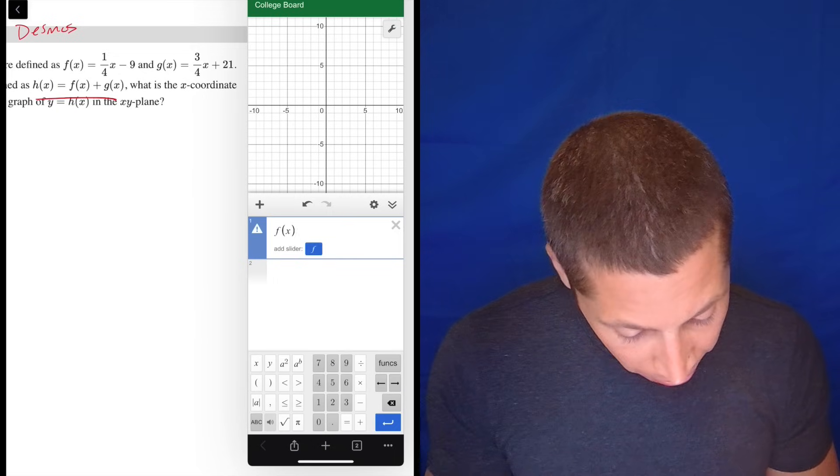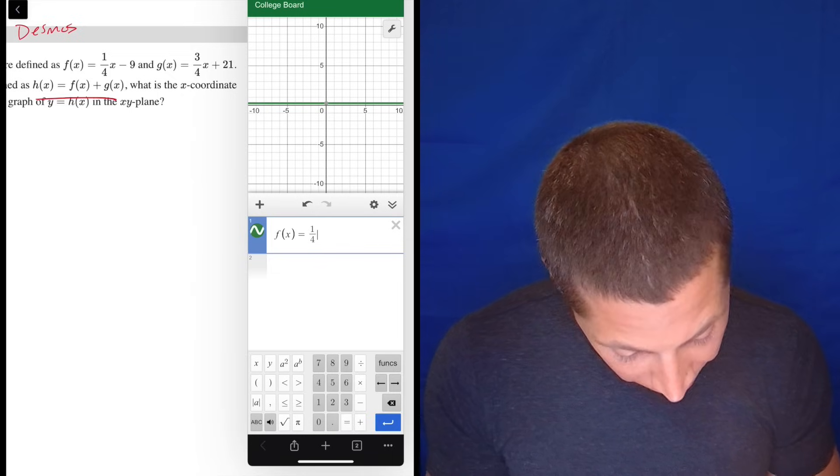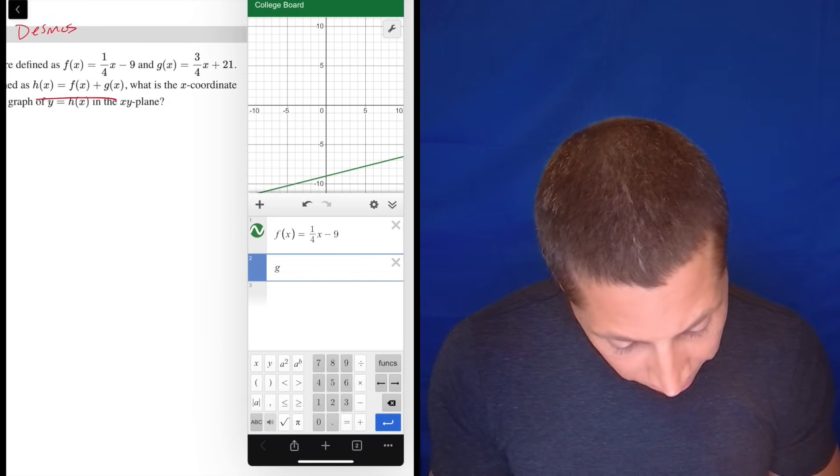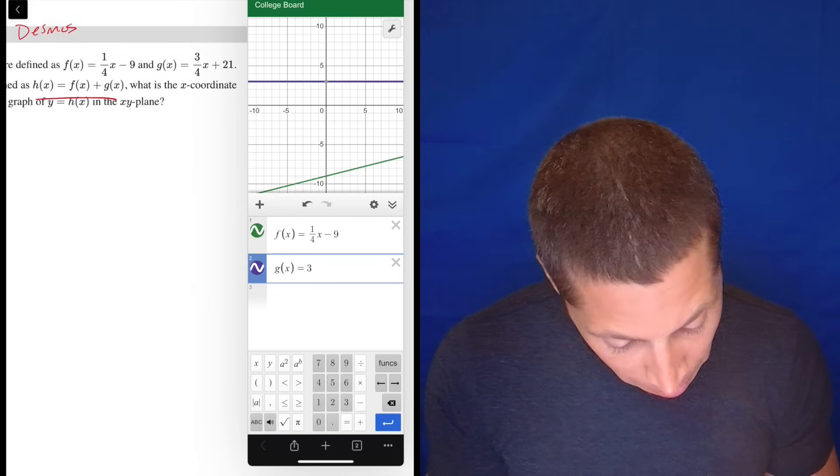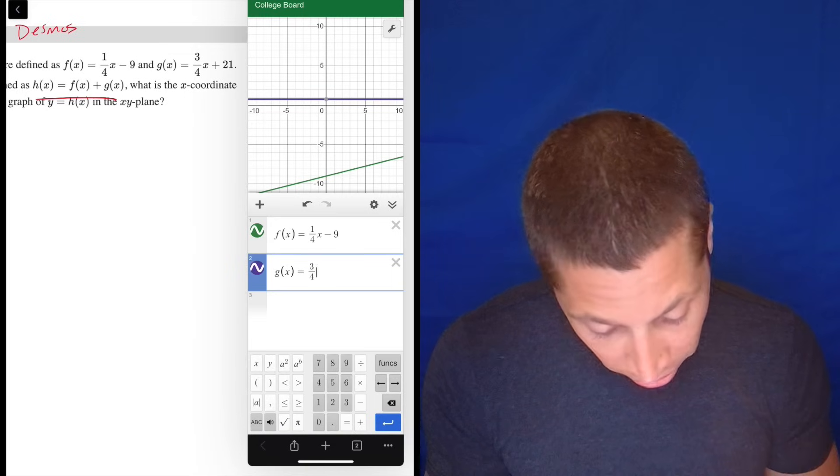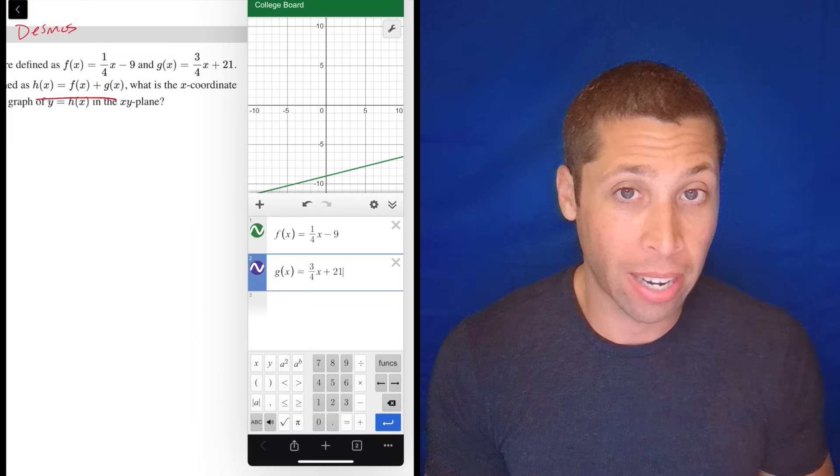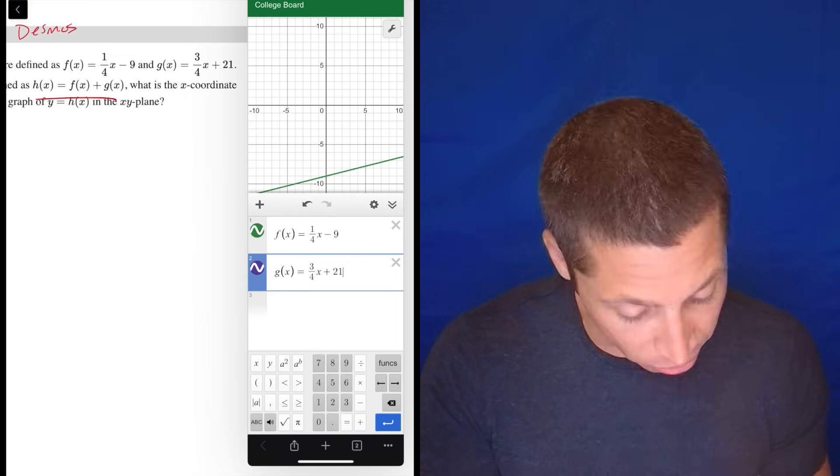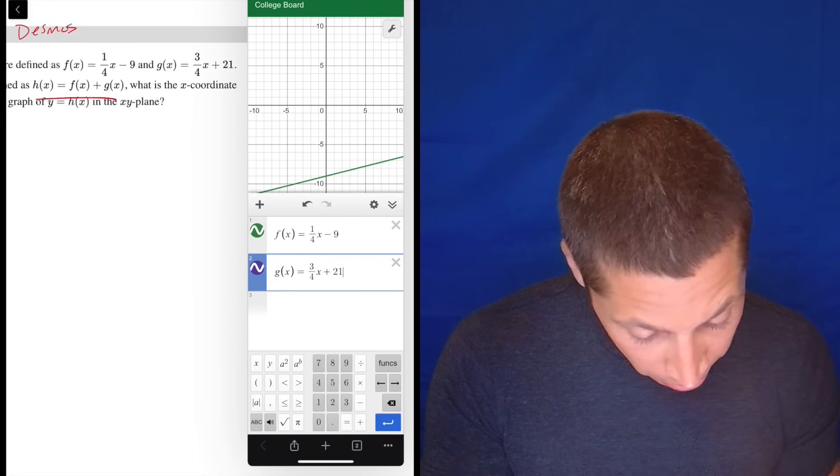So let's do f(x) equals 1/4x minus 9. Whenever I go to Desmos, one other piece of my strategy is I'm always looking back and forth between my typing and the actual equation because I very frequently will just type something wrong, especially when I'm using this iPad. I don't want to make that kind of mistake of doing the exact work but then losing it out because I mistyped a negative or something. So 1/4x minus 9, 3/4x plus 21. Everything looks good.